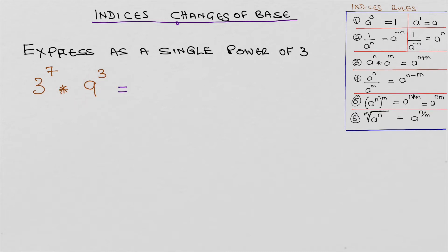And that can be written as 3 to the power of 7 times, well 9 equals 3 to the power of 1 times 3 to the power of 1, which equals 3 to the power of 2. When you're multiplying indices of the same base, you add the power.